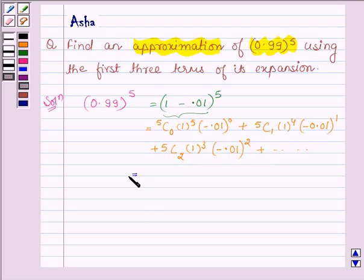This is further equal to: 5C0 is 1, 1 raised to the power 5 is 1, and minus 0.01 raised to the power 0 is 1. Plus 5C1 is 5, 1 raised to the power 4 is 1, times minus 0.01 raised to the power 1, which is 0.01 with a negative sign.